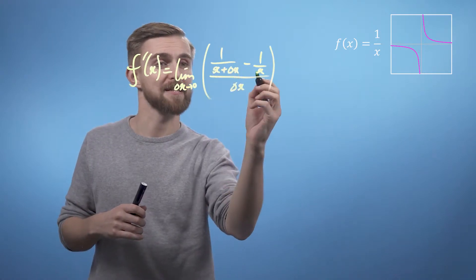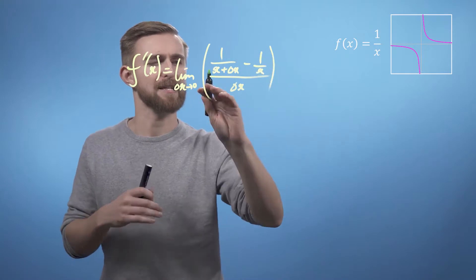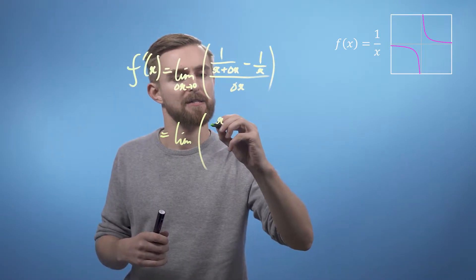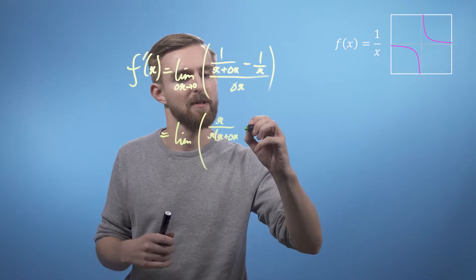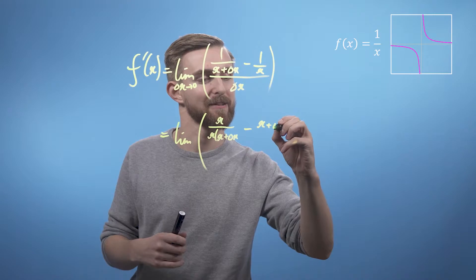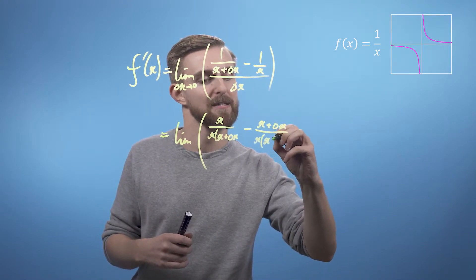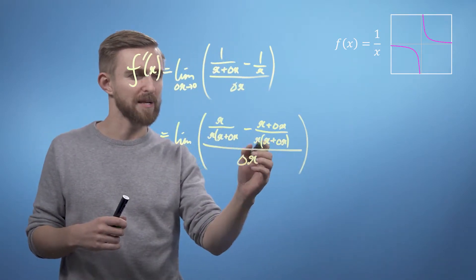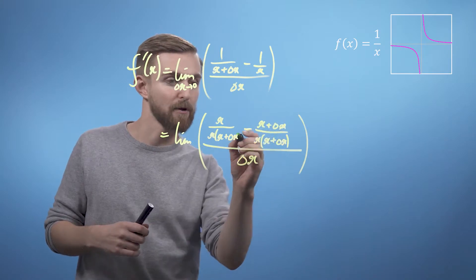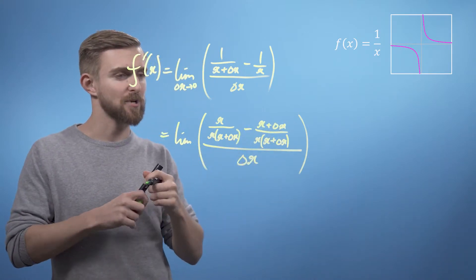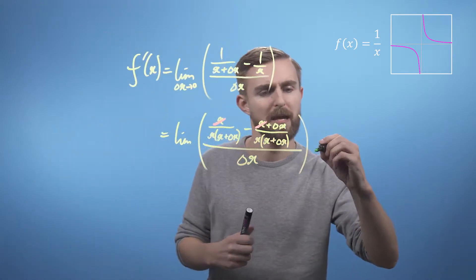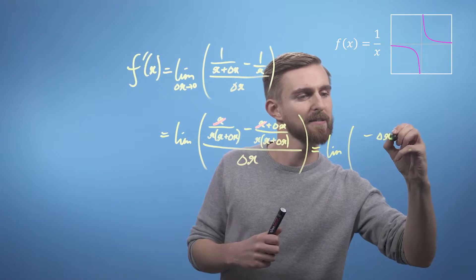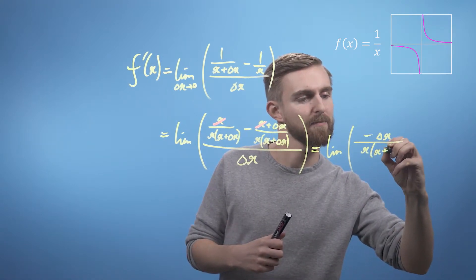We'll multiply top and bottom by x for the first fraction and top and bottom by x plus delta x for the second. So we get the limit of x over x brackets x plus delta x, minus x plus delta x over x brackets x plus delta x, all divided by delta x. Looking at these two terms, we've got an x and a minus x with the same denominator, so we can subtract these — this cancels with this.